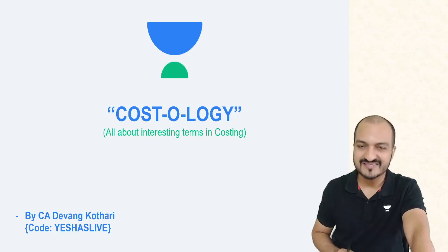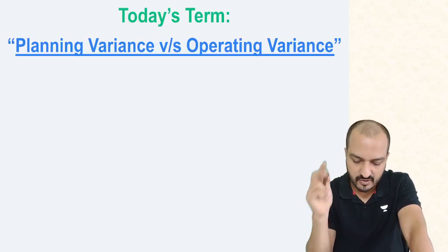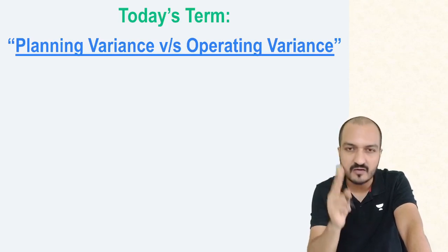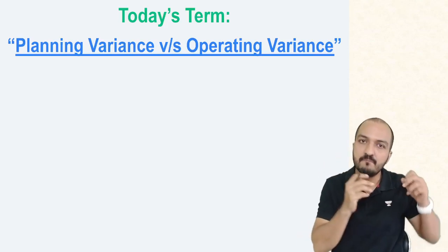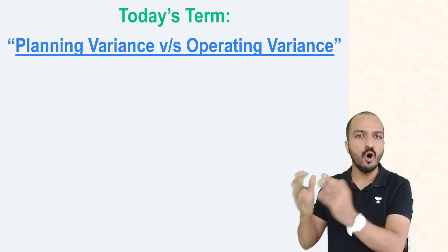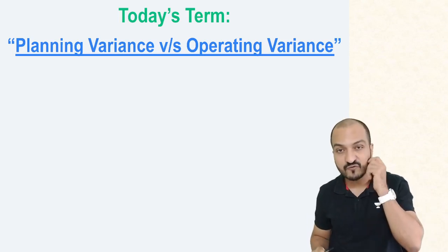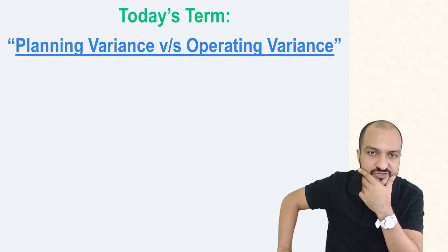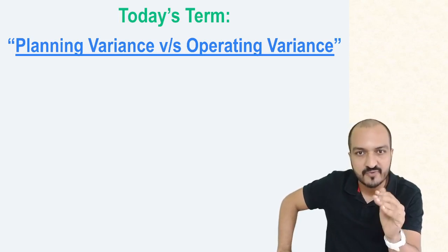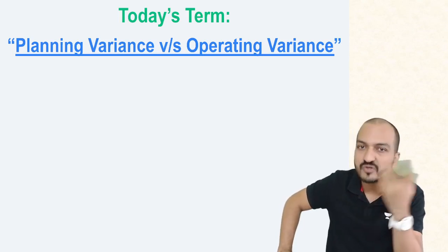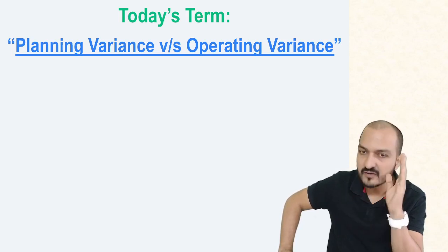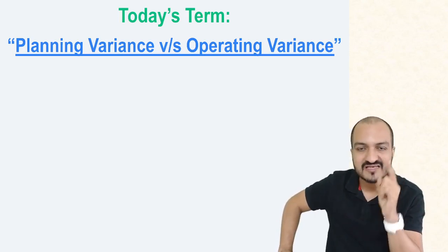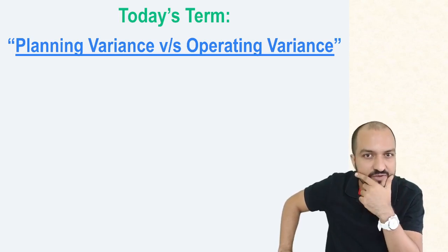My term for today is a comparison between two main concepts: planning variance versus operating variance. This is part of chapter number 11, that is standard costing variance calculation. Standard costing is a continuation from your CA Intermediate level, but this concept is new — especially for CA Final level.